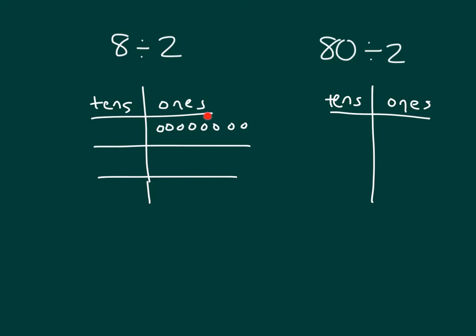So, 8 ones divided by 2: 1, 2, 3, 4, 5, 6, 7, 8. Within each of those groups, we have 4 ones. So that 8 ones divided by 2 does equal 4 ones.